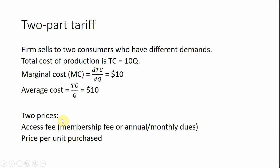In the two-part tariff — a little review — a two-part tariff is a two-part pricing strategy. There's an access fee, membership fee, or annual or monthly dues that needs to be paid before members can buy any units of the product the firm is selling. So we've got an access fee and then the price per unit purchased.